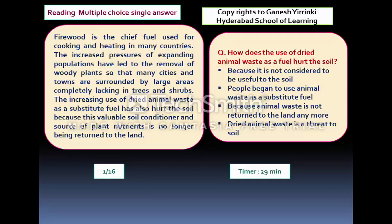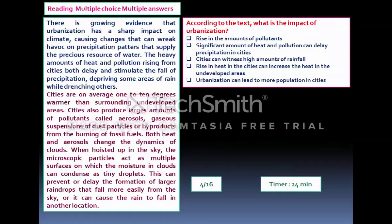The first question type is Reading Multiple Choice Single Answer. On the left you see a passage; on the right a question followed by options. You read the passage and pick only one answer. At the bottom you can see which question you are on out of 16, and on the right the timer. Please note there is only one question per passage — you will not see a second question related to the same passage.